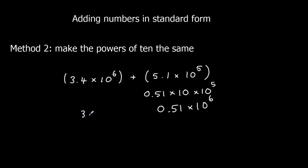Now we've got 3.4 times 10 to the power of 6, plus 0.51 times 10 to the power of 6. We can just add the two numbers, because — like 200 plus 300 equals 500 — it's the same process but in millions. So 3.4 million plus 0.51 million: just add 3.4 and 0.51 to get 3.91.